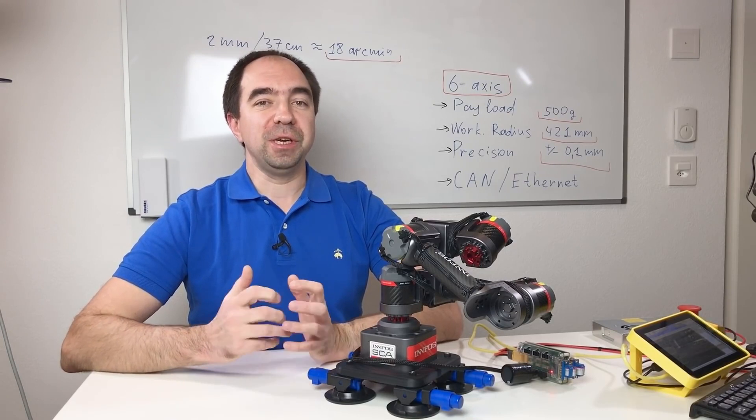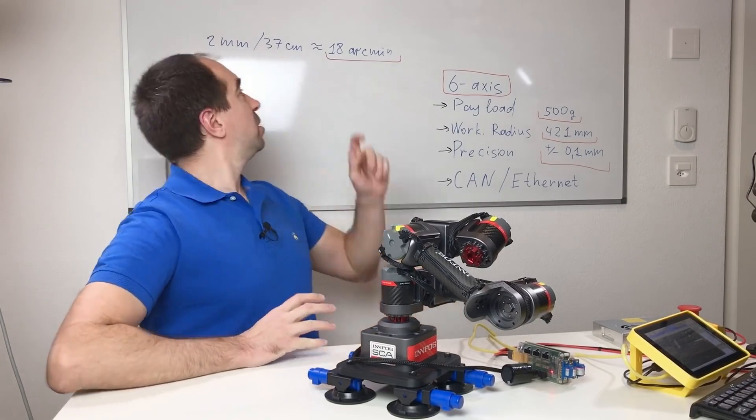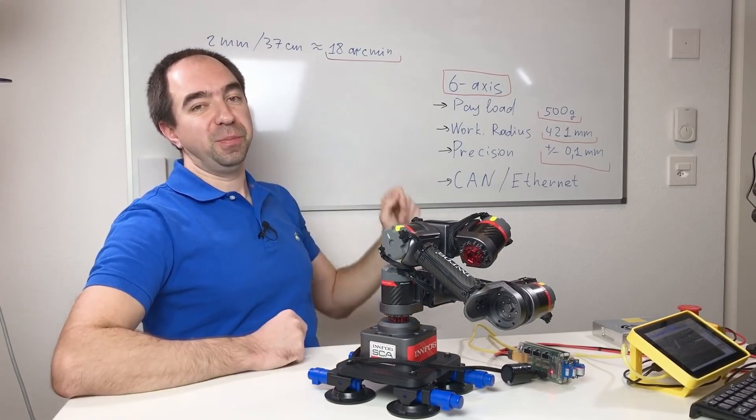But you should pay attention that these actuators have backlash. So the real precision of the robot arm which you can get is around two millimeters. It means that the backlash of the actuator is around 18 arc minutes, which is not bad.